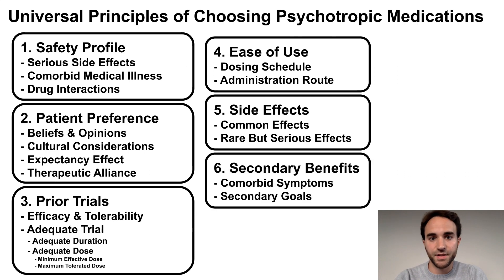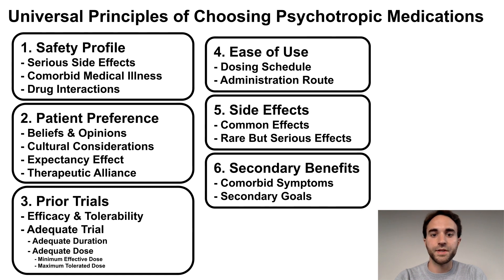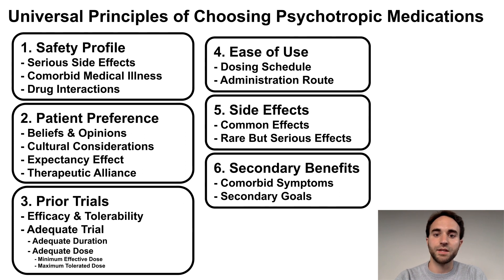Sixth, consider secondary benefits. If possible, choose a medication that targets multiple symptoms or accomplishes multiple goals. For example, if the patient wants to treat both their depression and their chronic pain, consider using an antidepressant that targets both.